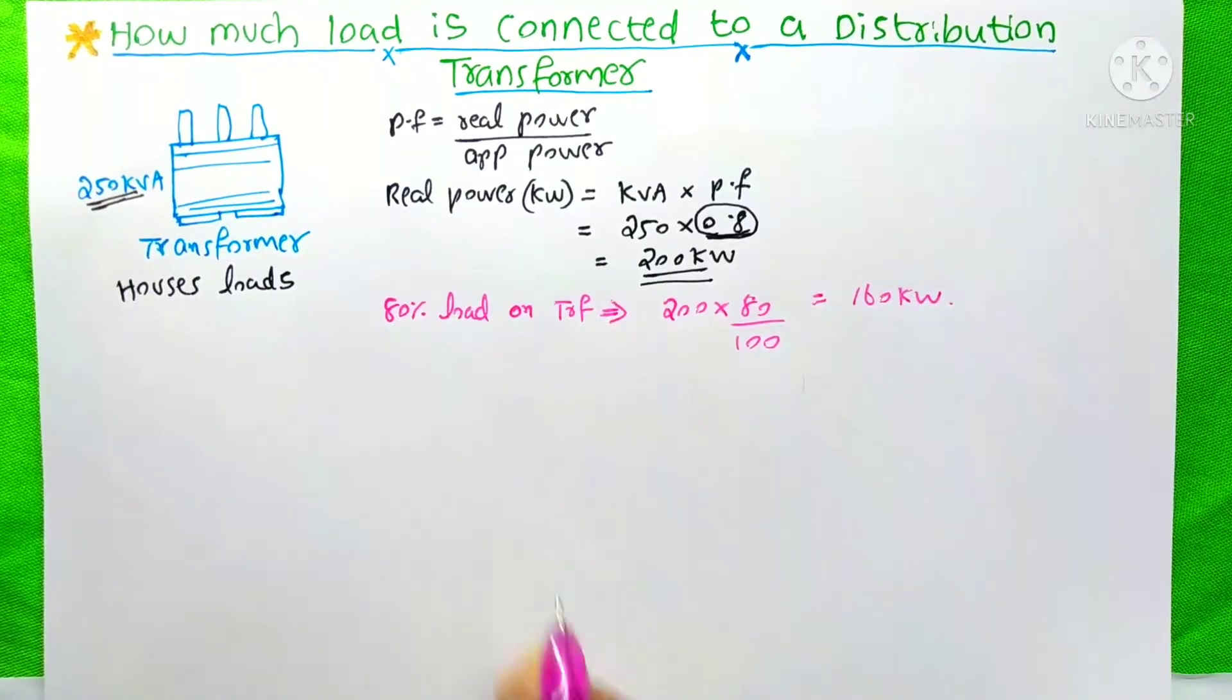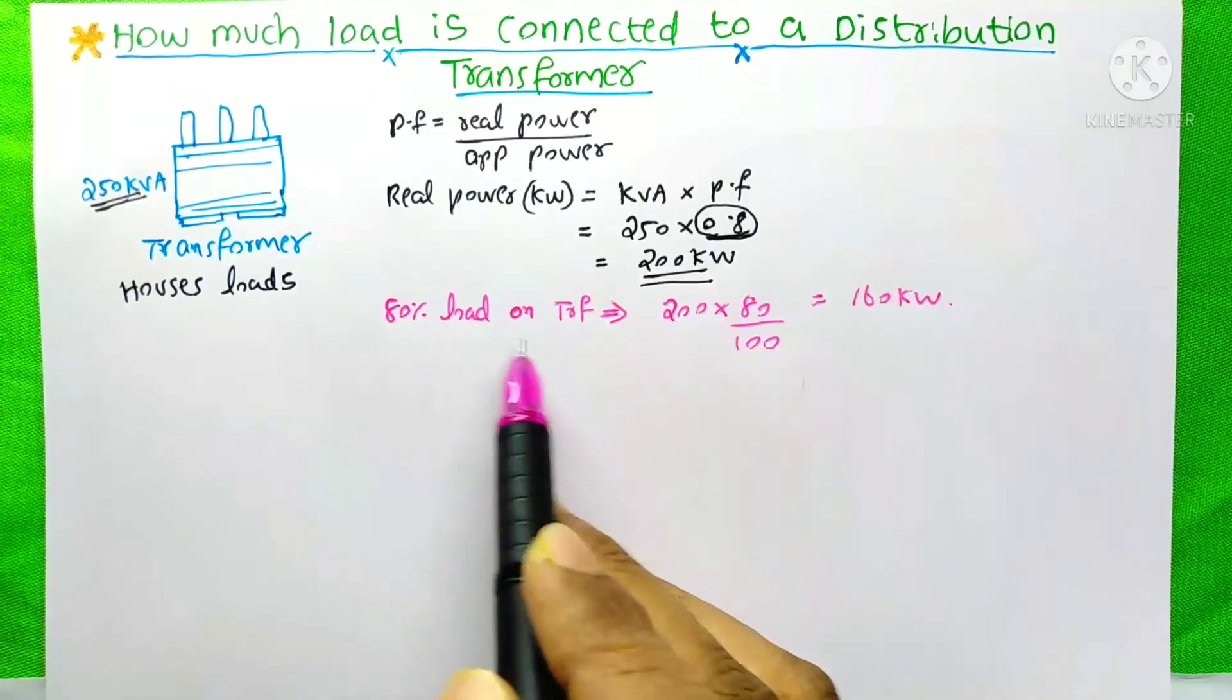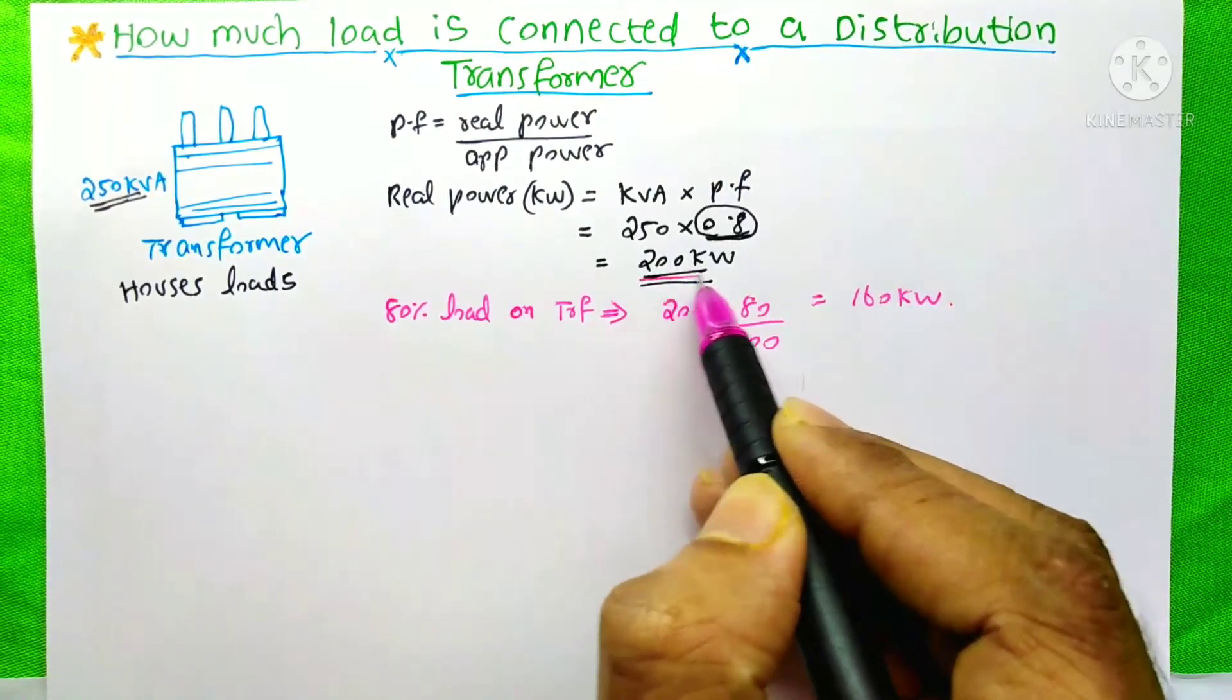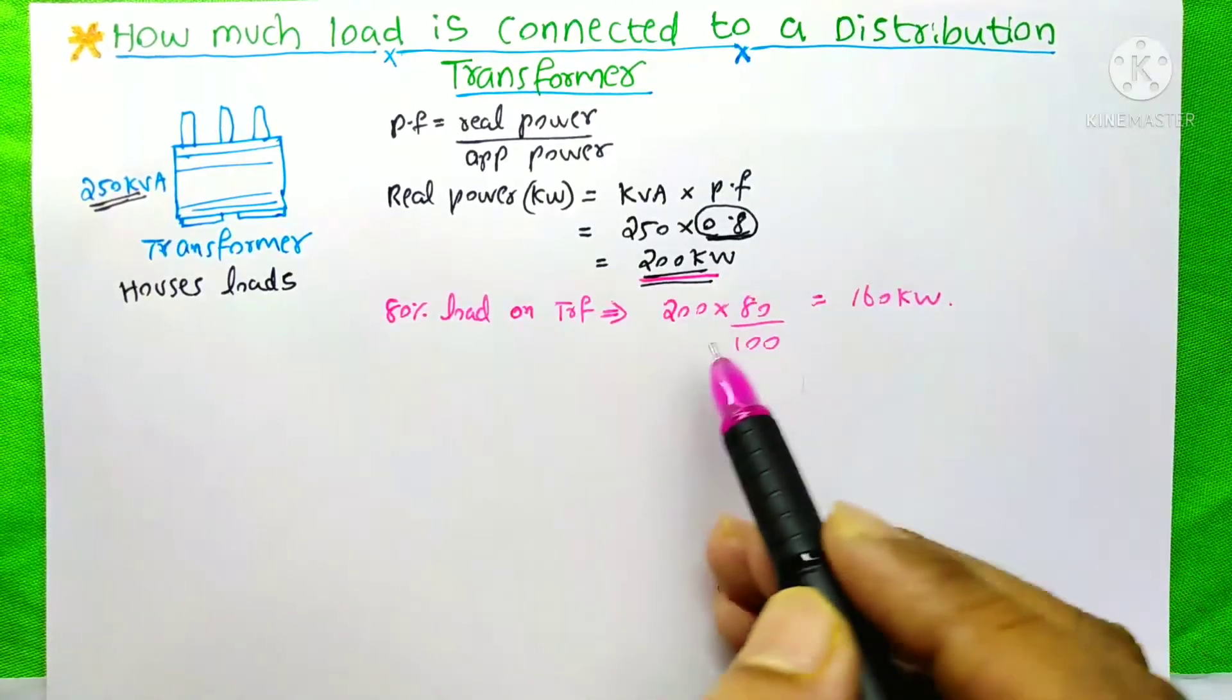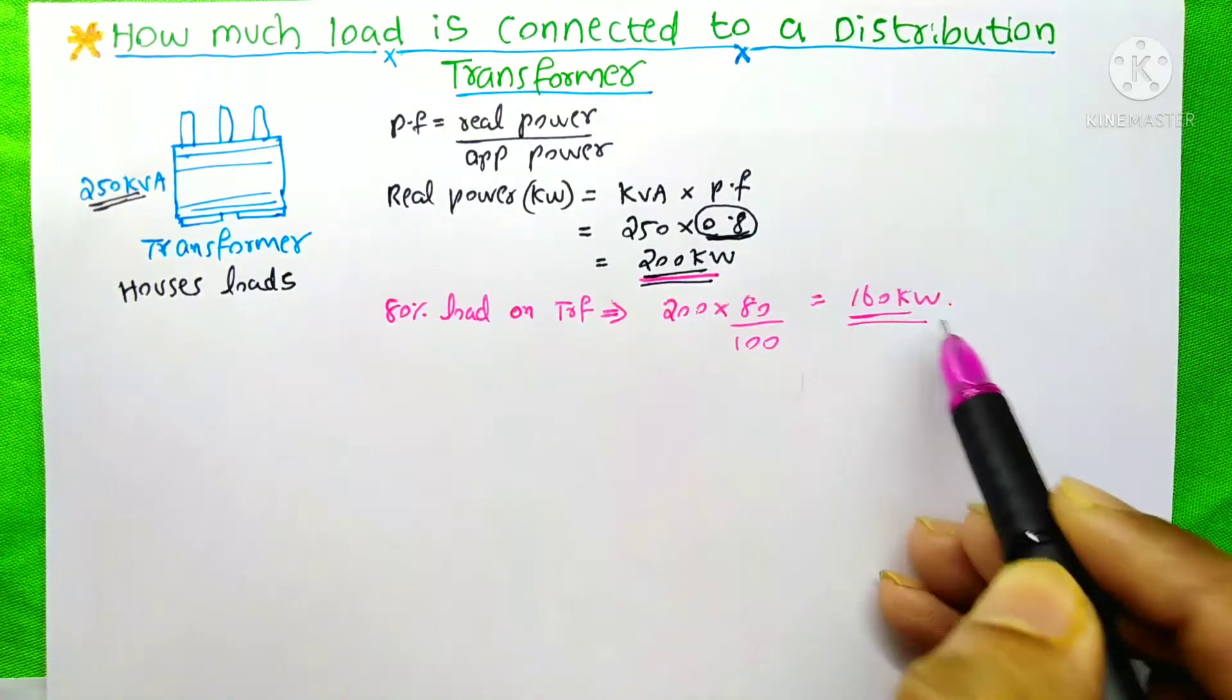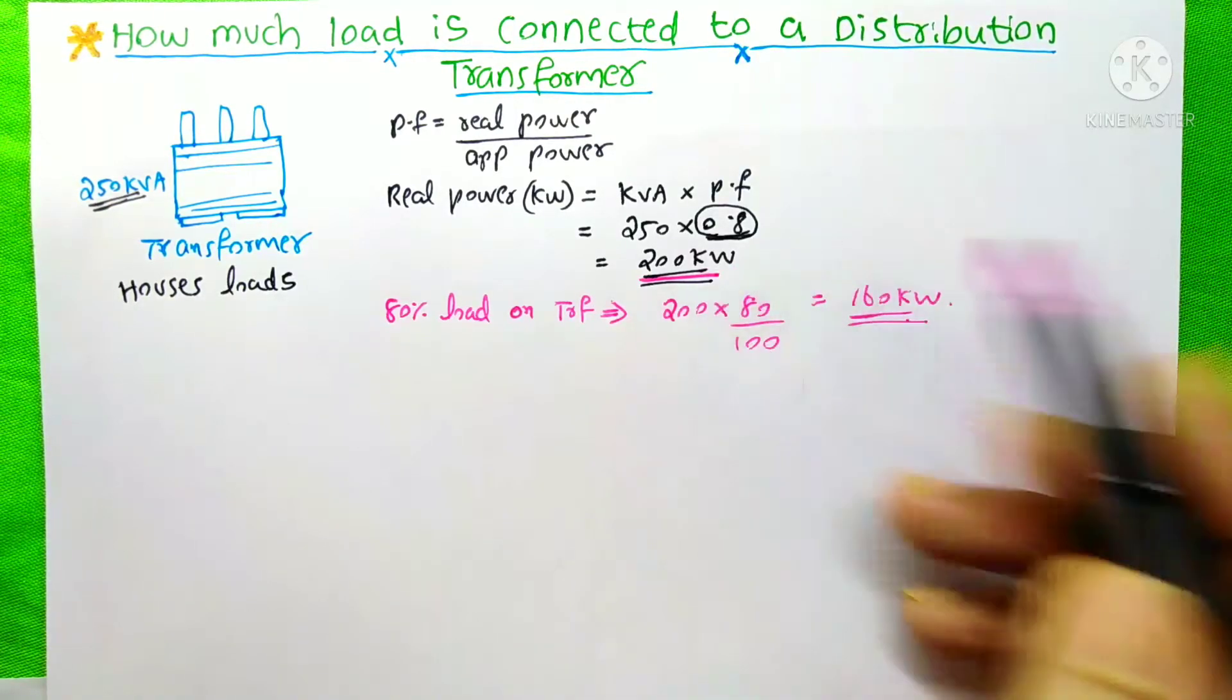For better performance of the transformer, we should connect an 80% load on this transformer. That means we are going to utilize 80% of this 200 kW. So 200 x 80% equals 160 kW. We are going to connect 160 kW of house load to this transformer.